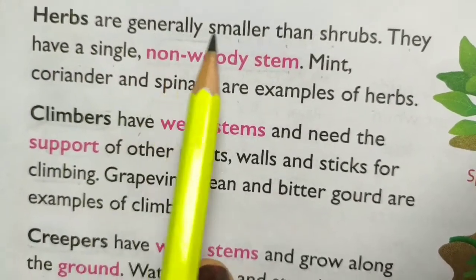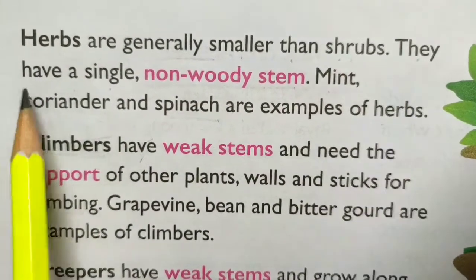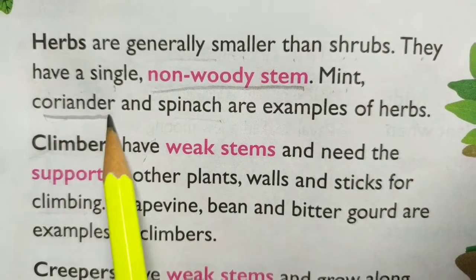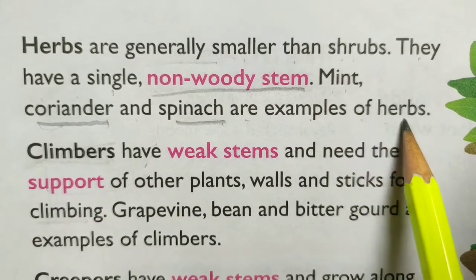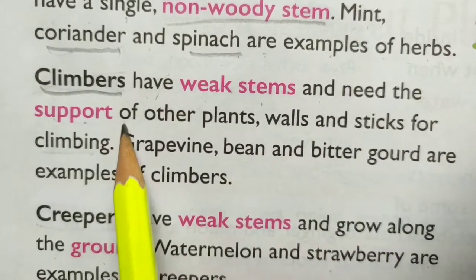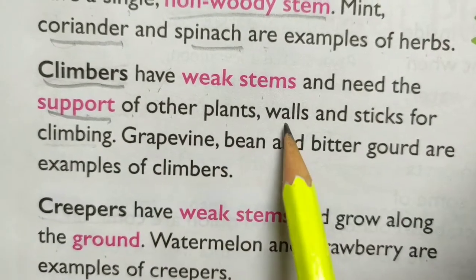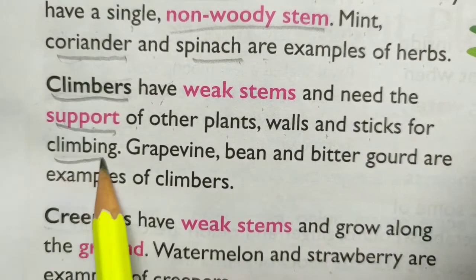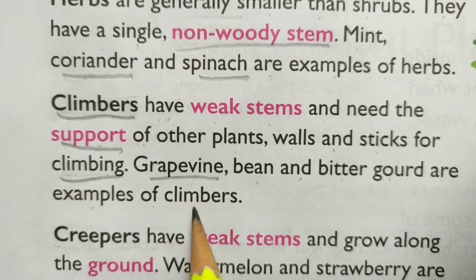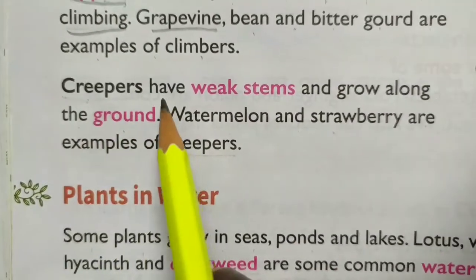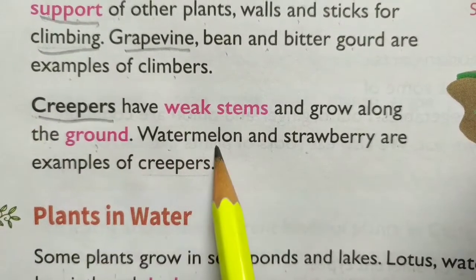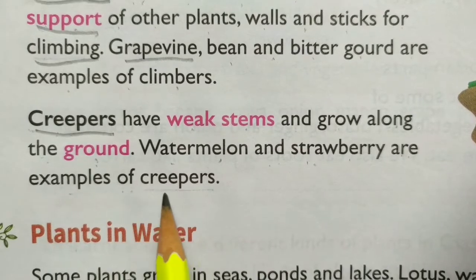Herbs are generally smaller than shrubs. They have a single non-woody stem. Mint, coriander and spinach are examples of herbs. Climbers have weak stems and need the support of other plants, walls and sticks for climbing. Grapevine, bean and bitter gourd are examples of climbers. Creepers have weak stems and grow along the ground. Watermelon and strawberry are examples of creepers.